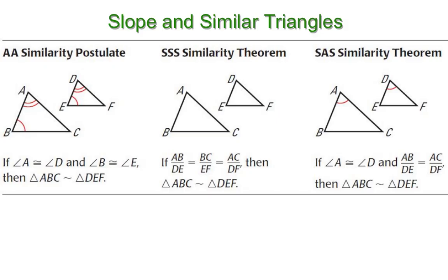There are three basic ways. One of them is the angle-angle similarity postulate, which just says if two of the angles are the same, or congruent to each other, that's enough information to say that the triangles are similar triangles.